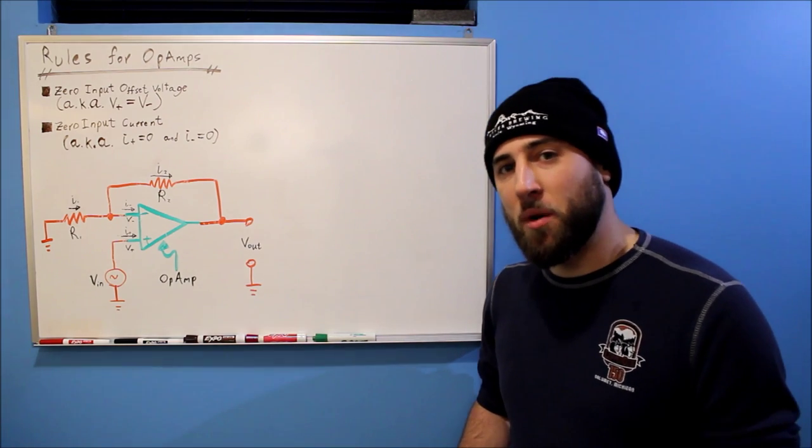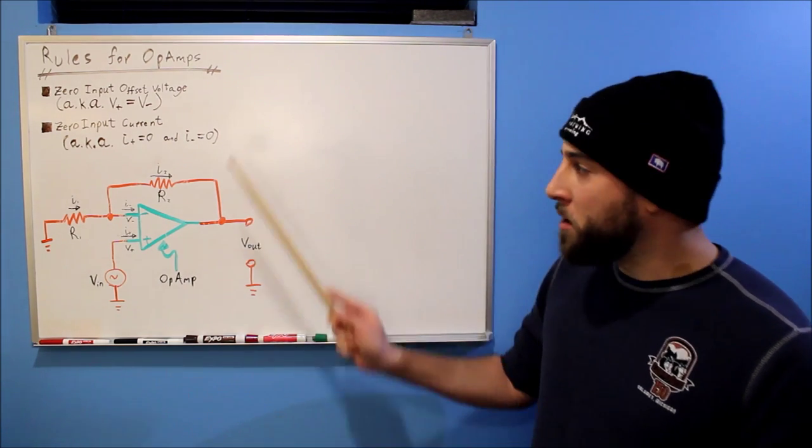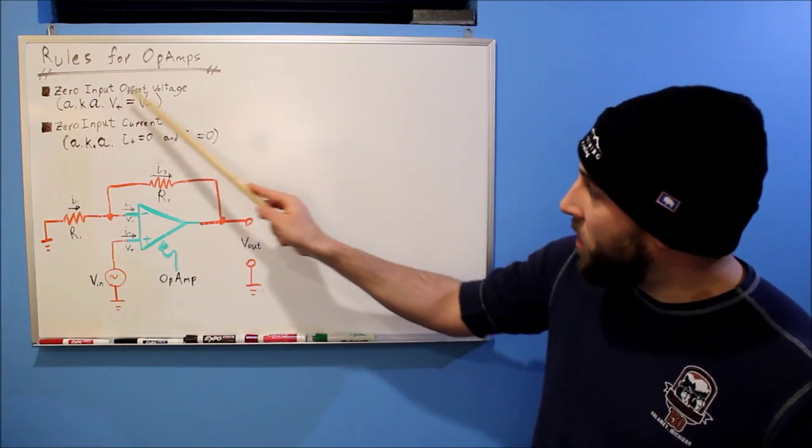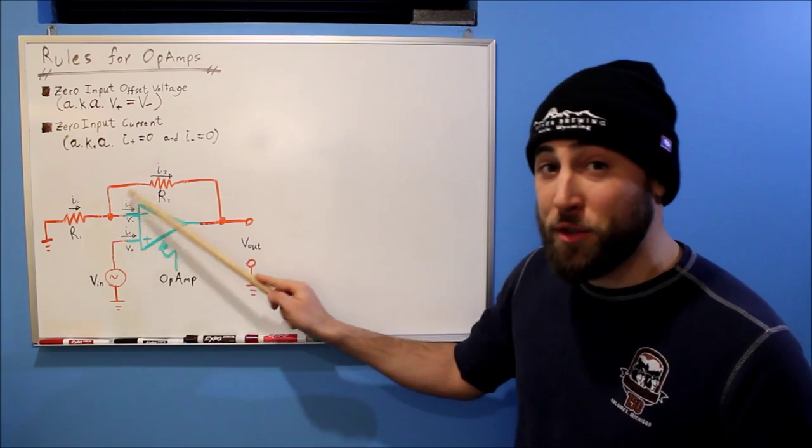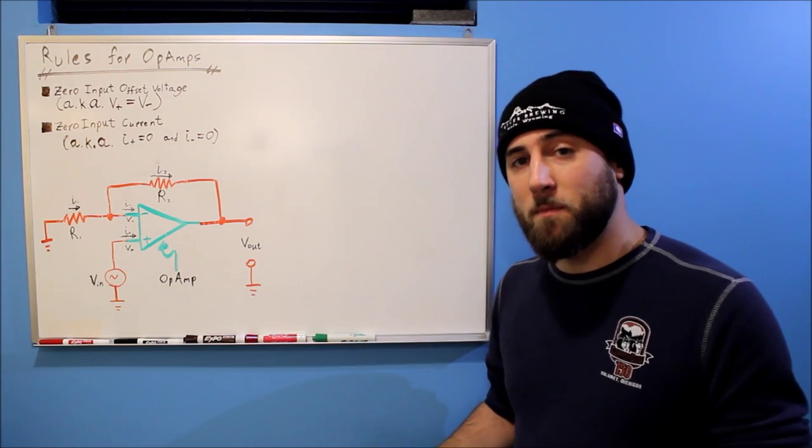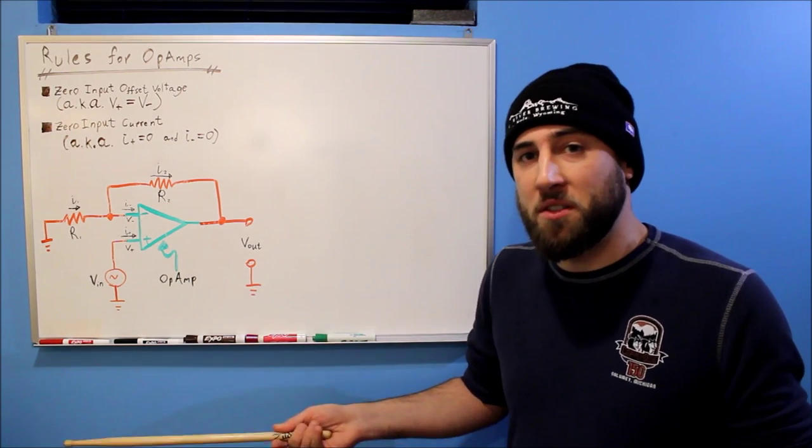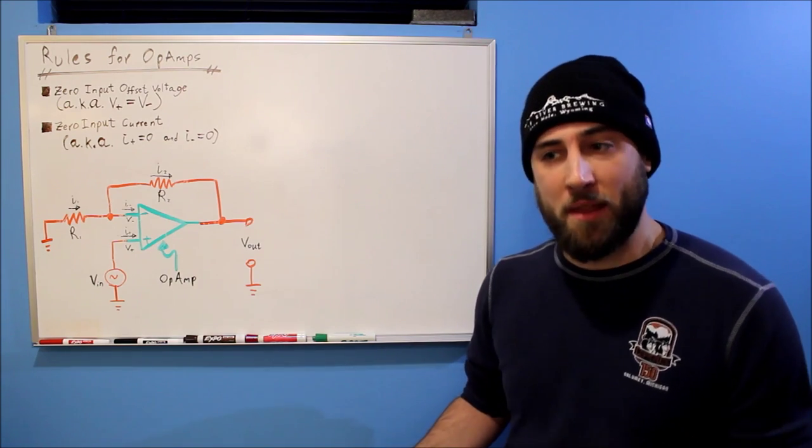Now what makes them special? What makes an op amp special? Well, it's these two rules here. Zero input offset voltage. That means that these two nodes, these two terminals, both have the same voltage, no matter what. They're always the same. There's zero difference in voltage between them.